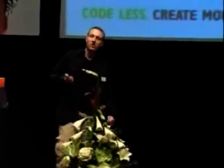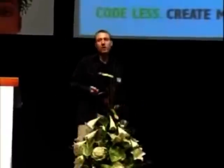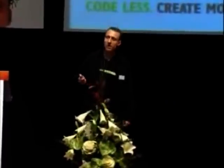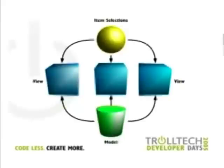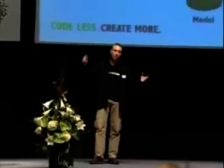We provide this functionality for you. And as Matthias said, if you want to use the standard Qt3 way of doing things, the Qt3 support library is also there. But we are talking about model-view programming. With this architecture we have one model where all the data is stored, and three views presenting the data in totally different ways — but it's the same data. At the top we have selections, and we can share them between views, so selecting an item in one view also shows it selected in another.